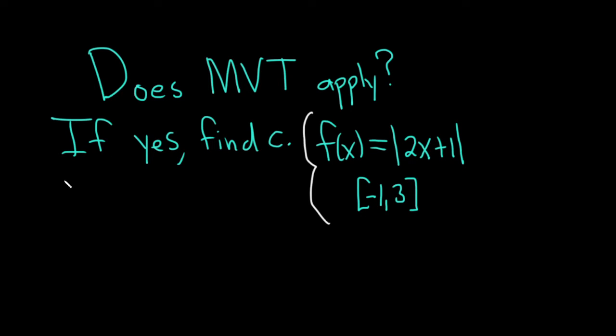The mean value theorem has two conditions. First, you need continuity on the closed interval [-1,3]. Is it continuous here? Well, the absolute value function looks like a V and it's continuous everywhere, so there are no issues.